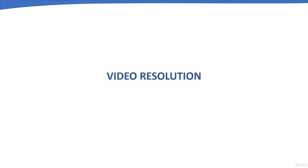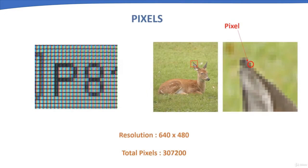This chapter covers video resolution standards in CCTV systems. Every image we see is made up of pixels, and the collective group of pixels defines the resolution of an image. Resolution is technically the number of pixels per unit of area, described by the number of pixels arranged horizontally and vertically on a monitor. For example, a resolution of 640 x 480 means there are a total of 307,200 pixels.